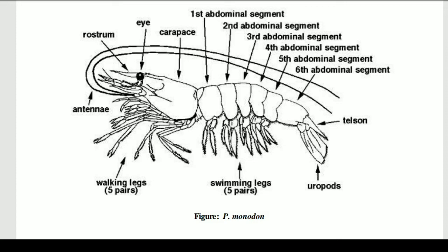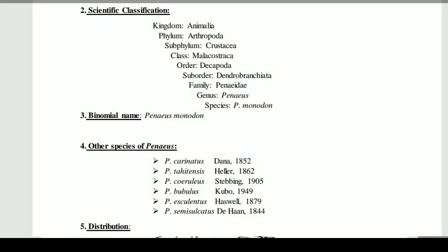Scientific classification of Penaeus monodon: Kingdom Animalia, Phylum Arthropoda, Subphylum Crustacea, Class Malacostraca, Order Decapoda, Suborder Dendrobranchiata, Family Penaeidae, Genus Penaeus, Species monodon. The binomial name is Penaeus monodon. Other species of Penaeus include Penaeus kerathurus, Penaeus bubulas, Penaeus hemisulcatus, and others.